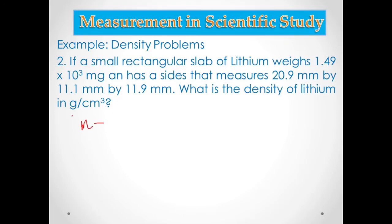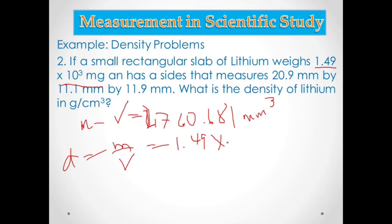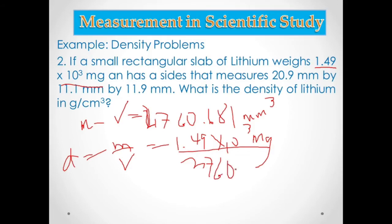The mass is 1.49 × 10³ mg and the volume is 2,760.681 cubic mm. Using density equals mass over volume: density equals 1.49 × 10³ mg divided by 2,760.681 cubic mm.